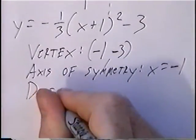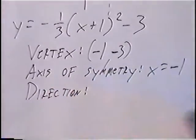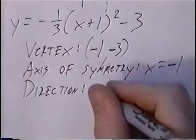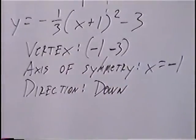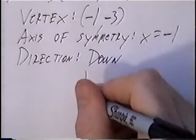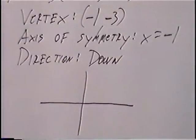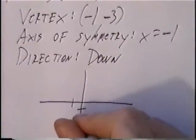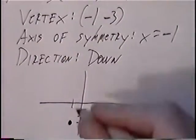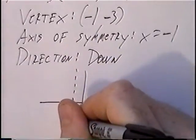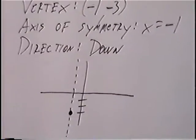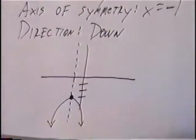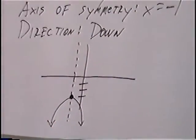The last part is direction. Looking at the value of a — the number in front of the parentheses — negative one-third means the direction of this graph goes down. Sketching the graph: the vertex is at (negative 1, negative 3). You can draw the dashed axis of symmetry through the vertex, then sketch the parabola shape opening down. That is the graph for this equation.